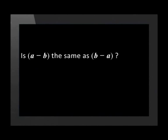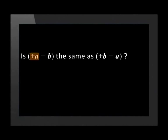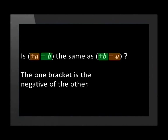So let's go back to the original question. In the first bracket, the a is positive and the b is negative. In the second bracket, a is negative while b is positive. So the signs in the two brackets are opposite, which means the one is the negative of the other.